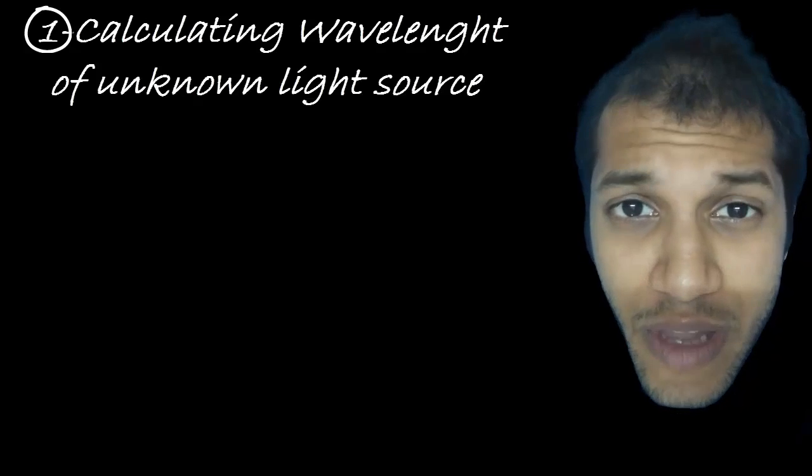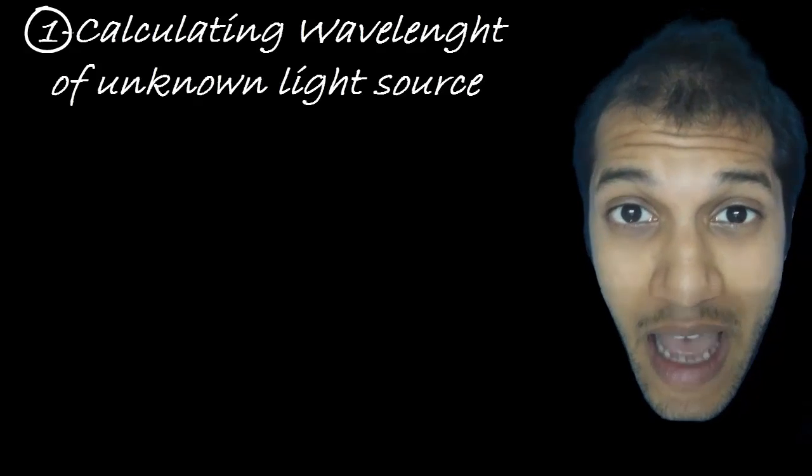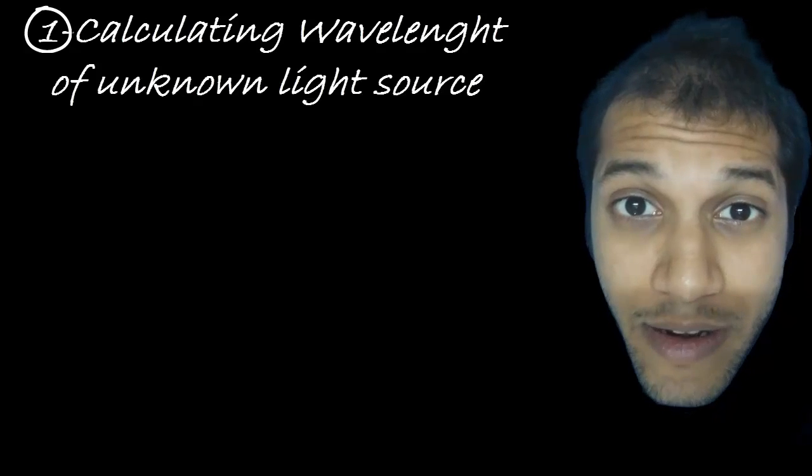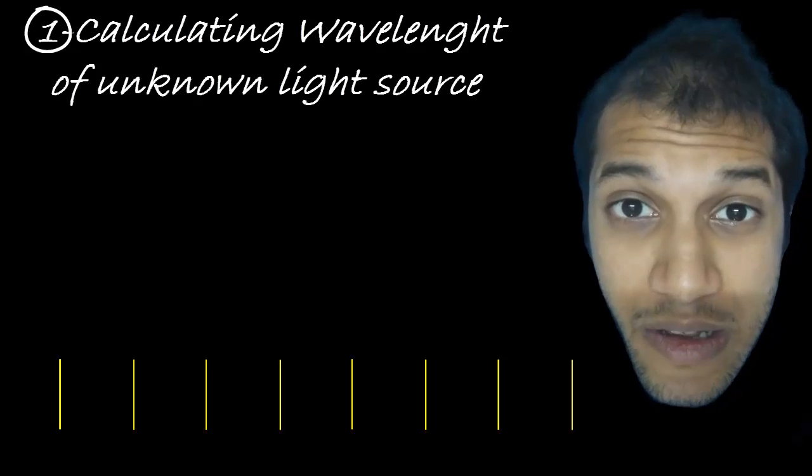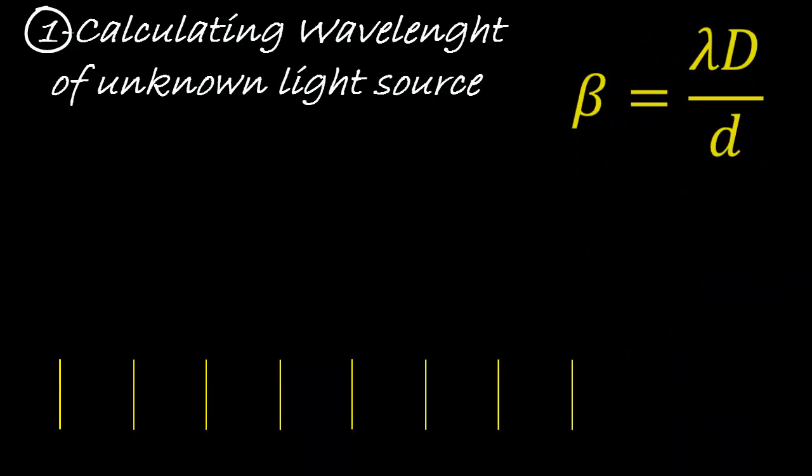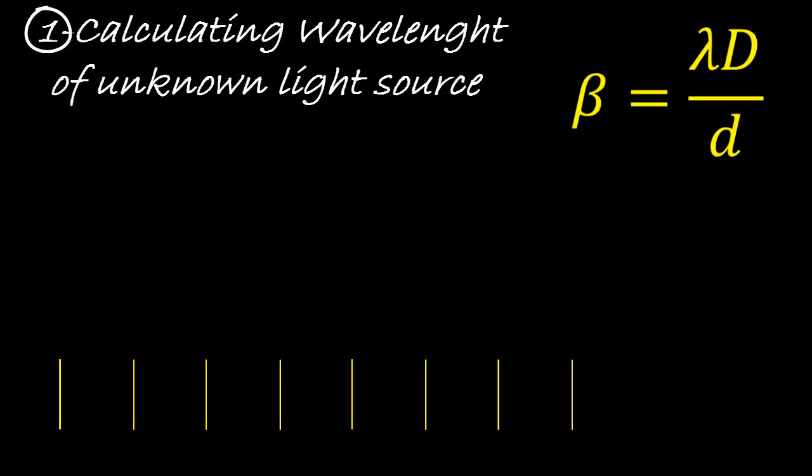If I have an unknown wavelength of light, if I pass it through a grating, I will get a diffraction pattern, I will get an interference pattern. And the pattern would have a fringe width, beta, which is given as lambda D divided by small d. We have seen this before, nothing changes.